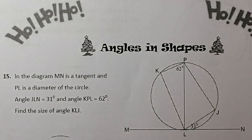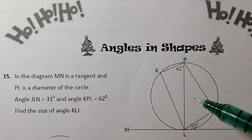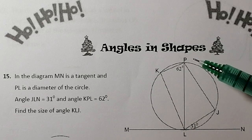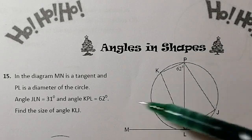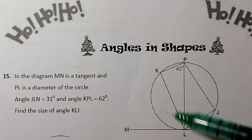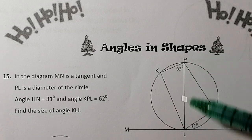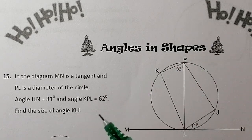This is National 5 Revision. What we're looking at here is angles in a circle. This should help you with your assessments in January or February. Let's have a look at this question here. We're going to do two questions. This one here has some angles in the circle. We've got a diameter and a tangent, so we've got a couple of properties that we're going to have to consider when we answer this question.